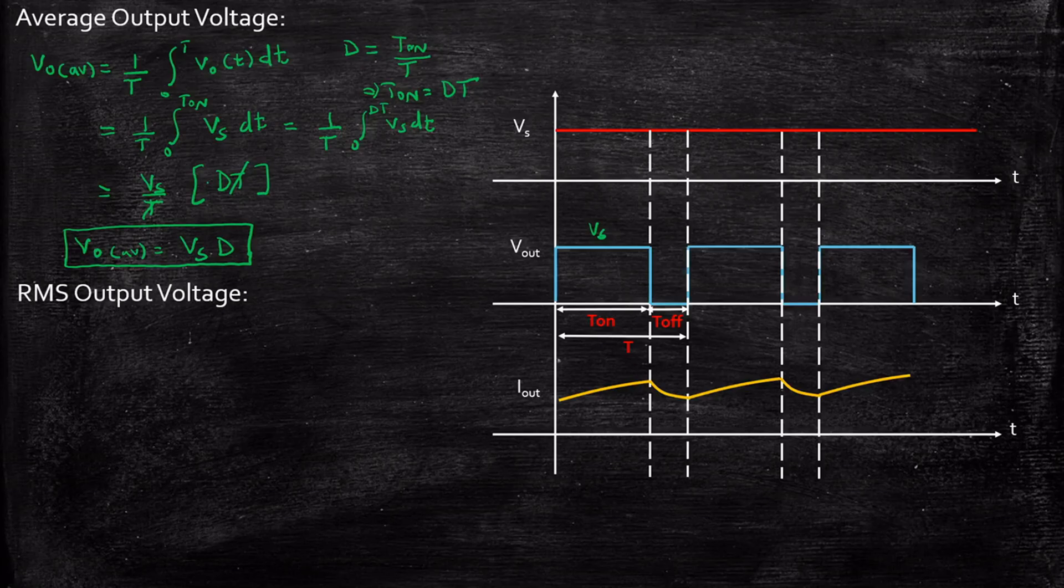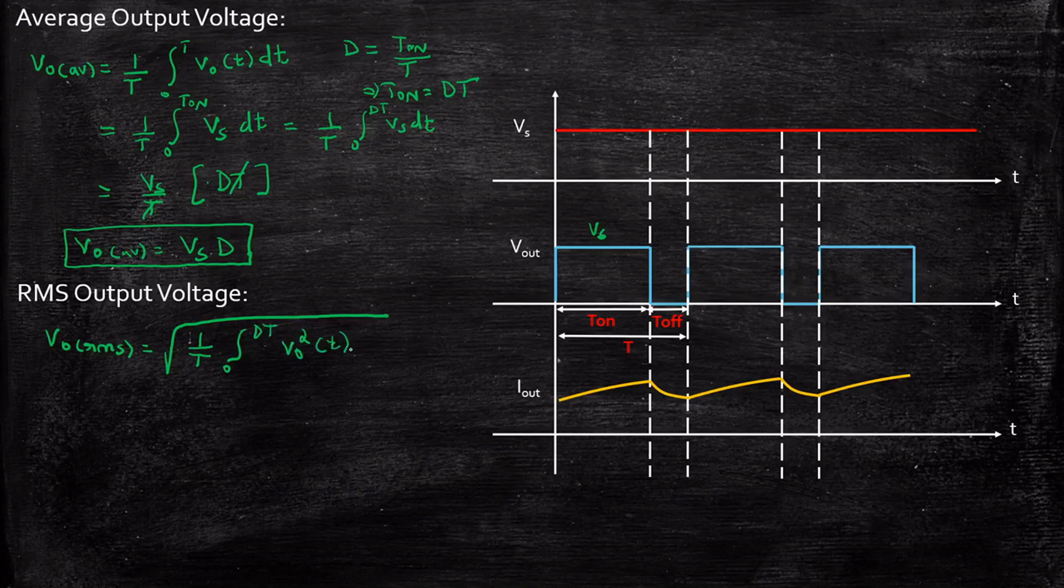Now, what happens to the RMS output voltage? Again, fundamentally, by definition, we know that Vout RMS is equal to square root of 1 by T. Again, I will be writing directly 0 to DT Vout square of T into dT. That is equal to square root of Vout square. This Vout can be written as Vs. Because we see, we have seen that the magnitude will be Vs. So, we can write it as 0 to DT Vs square into dT.